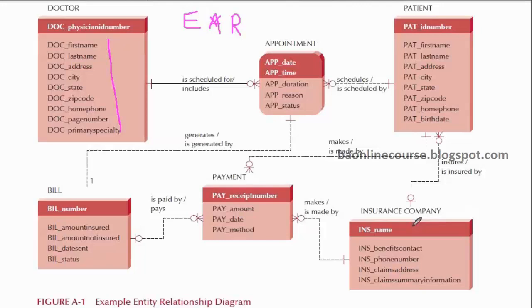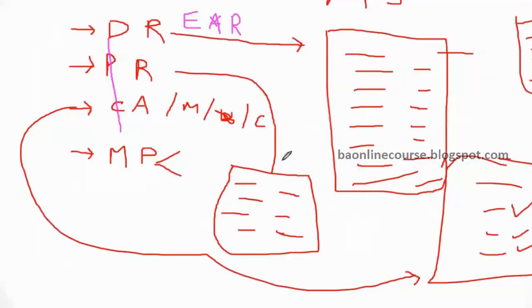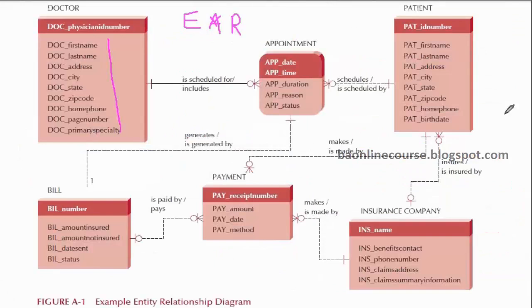Then some object or thing — like a bill. A bill is a physical thing that you can see — you're storing information about that as well. And finally, some transactions: whenever you create an appointment, that's a transaction or an event. Similarly, a payment is an event or transaction happening, and we need to store information about that. Broadly, going by the definition, you will figure out what all the entities are: a doctor entity, a patient entity, an appointment, payment, a bill, and insurance company.